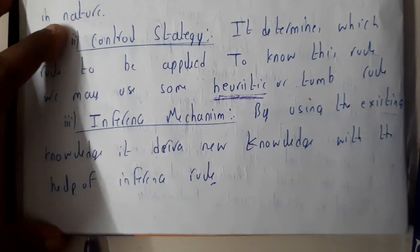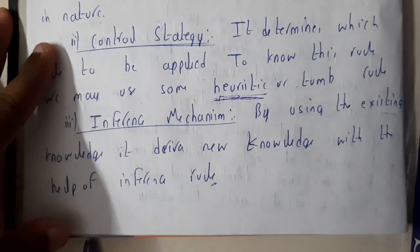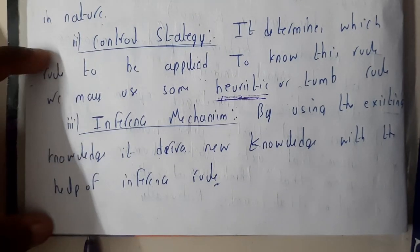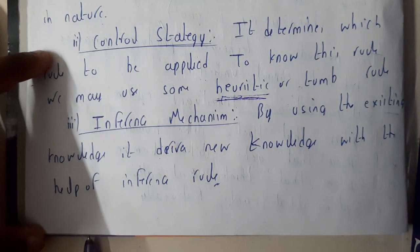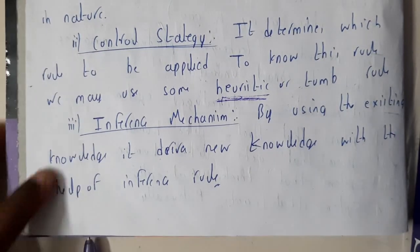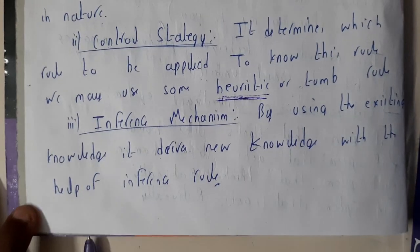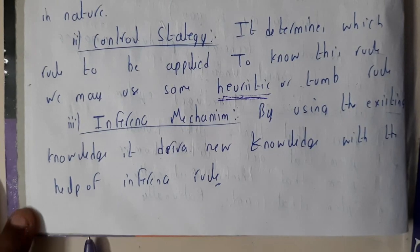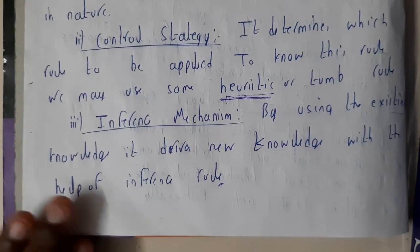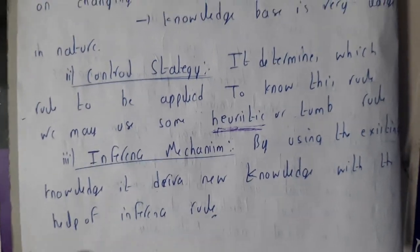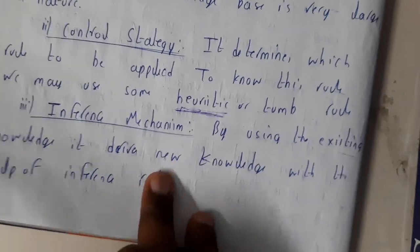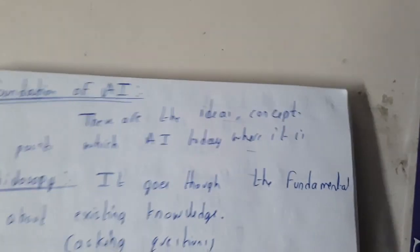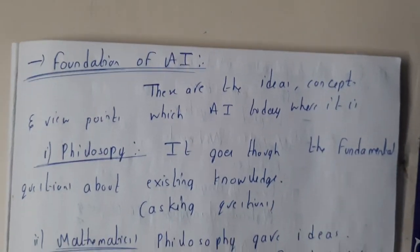Inference mechanism is where you take existing rules and create new knowledge. By using existing knowledge it drives to new knowledge, which is what inference rules are about. So from two existing things you derive a third — that's the inference mechanism.